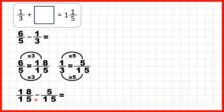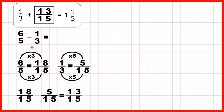Now our denominators are the same, so the denominator stays the same in our answer, and 18 minus 5 is 13. So our missing fraction is 13/15. And that makes sense, because 1/3 is 5/15. If we add 13/15, we get 18/15, which is the same as 6/5, or 1 and 1/5.